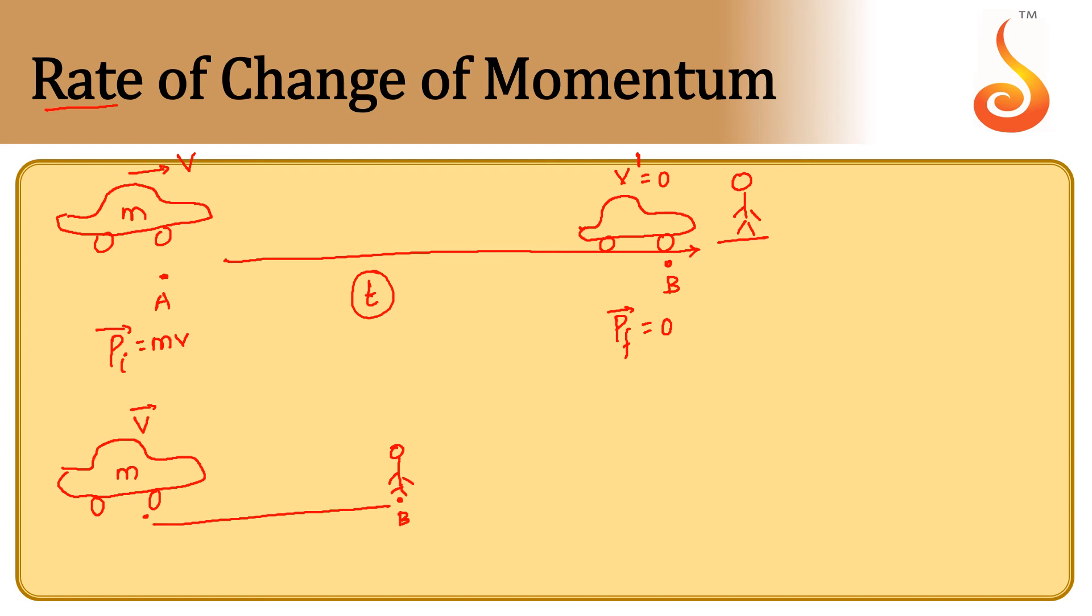Therefore, he wants to bring down the velocity of the car to 0 within a very short span of time. Therefore V' should be 0 here. Here, the time will be very less.